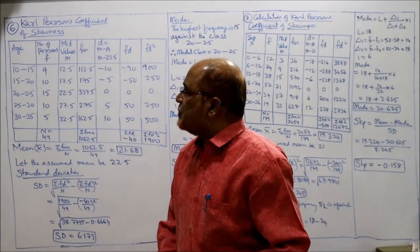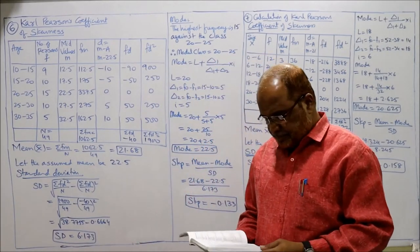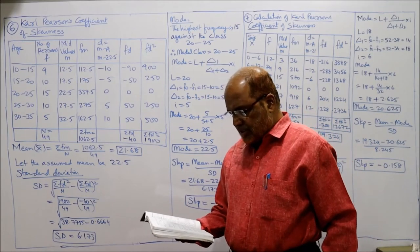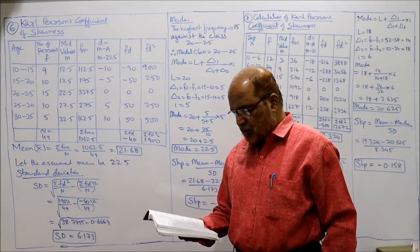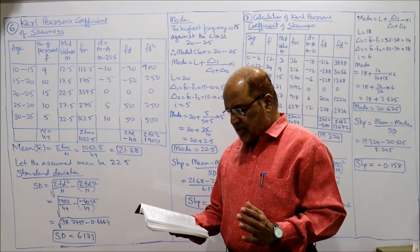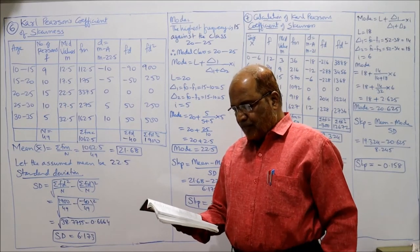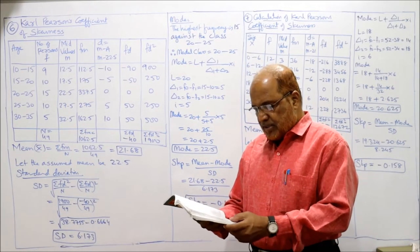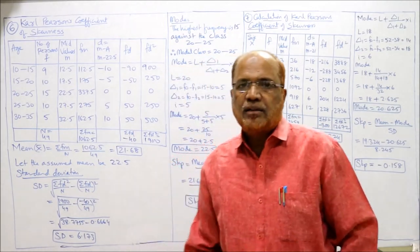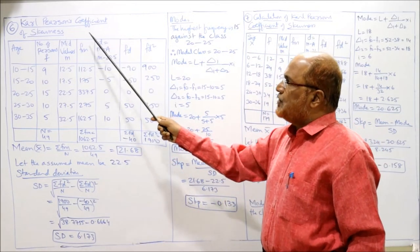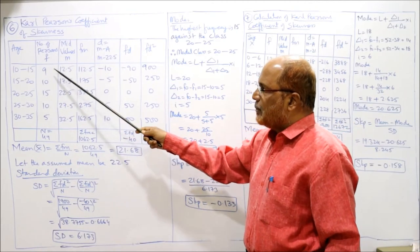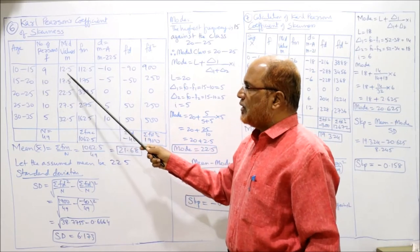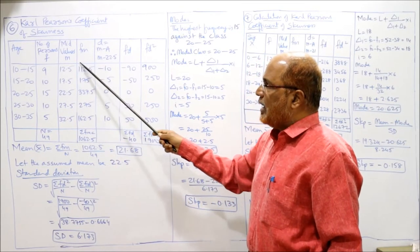Now we'll start problem number 6. From the following data, calculate Karl Pearson's coefficient of skewness. Age in years: 10 to 15, 15 to 20, 20 to 25, 25 to 30, 30 to 35. Number of persons is given — it's a continuous frequency distribution. The mid values are calculated as 12.5, 17.5, and so on. We multiply f into m to get fm.